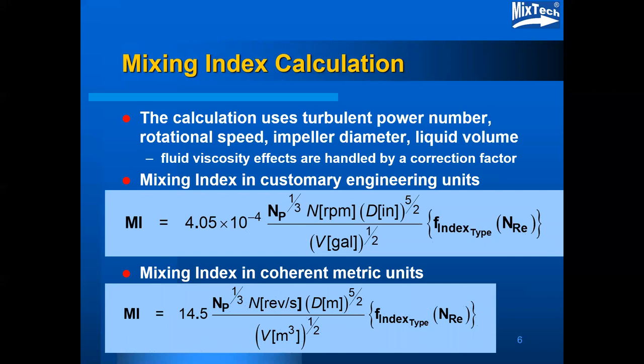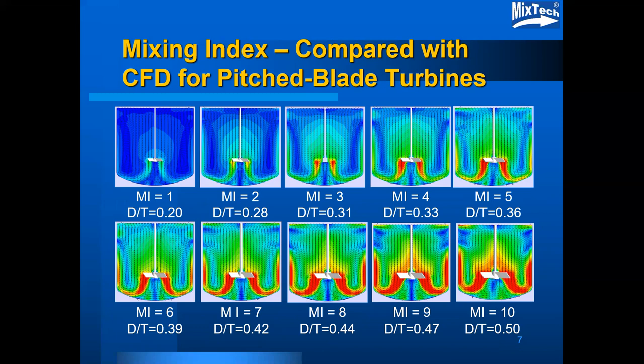The mixing index can be calculated in other units such as metric units; the only difference is the coefficient, which changes because of the different units. This is a representation of what the mixing index is intended to provide, showing 1 to 10 values for the mixing index with corresponding computational fluid dynamic representations of velocities at those conditions. This could have been done with changing rotational speed only, but because that becomes more extensive than is typically allowed in practical industrial applications, I chose to increase the impeller diameters across the range to give both the effect of mixing intensity and what you would expect to see in a CFD plot.